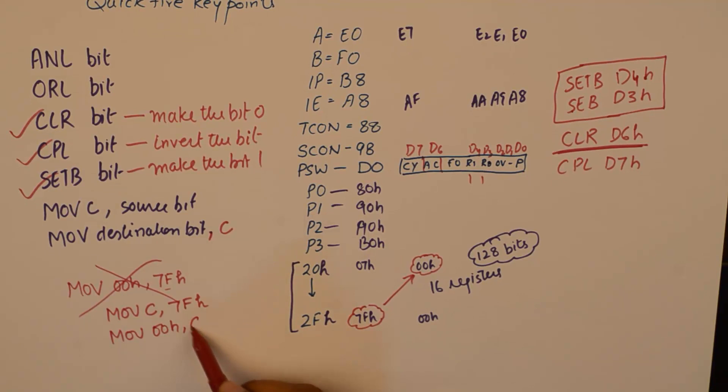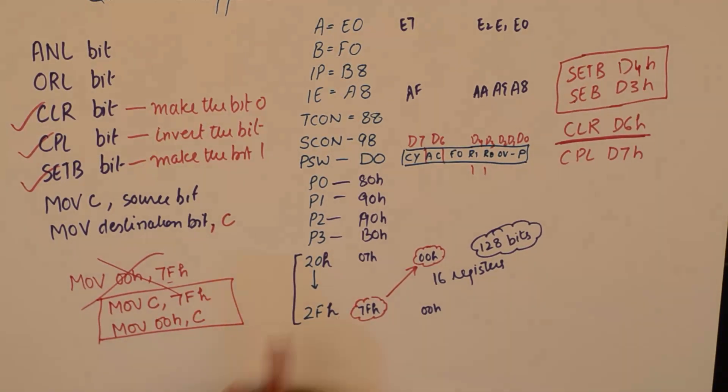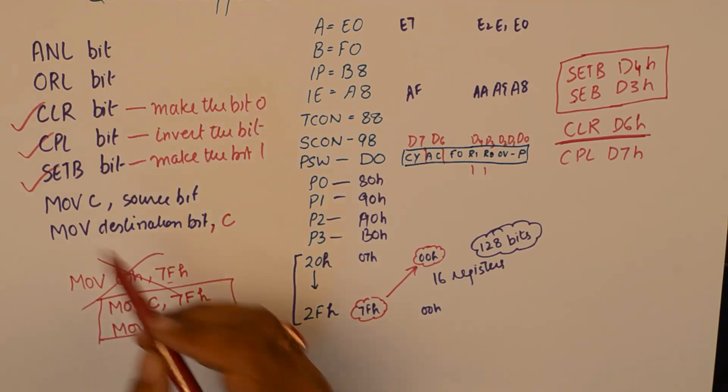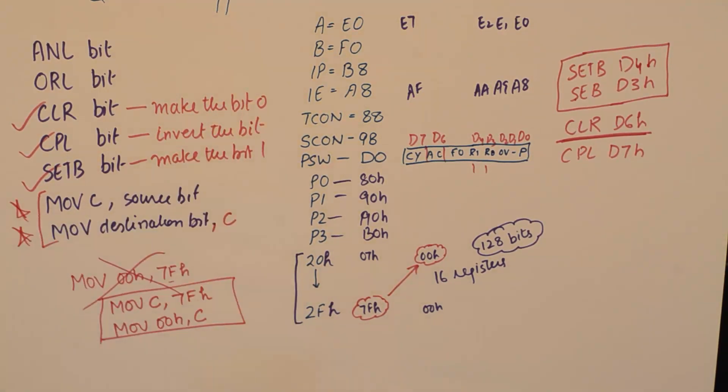Now this way the microcontroller will understand that 7FH is not a register, we are talking about the address of a bit here. So this is supremely important. Anything which has to be moved between the bits will go via C. And now we are left with the logical operations on bits.